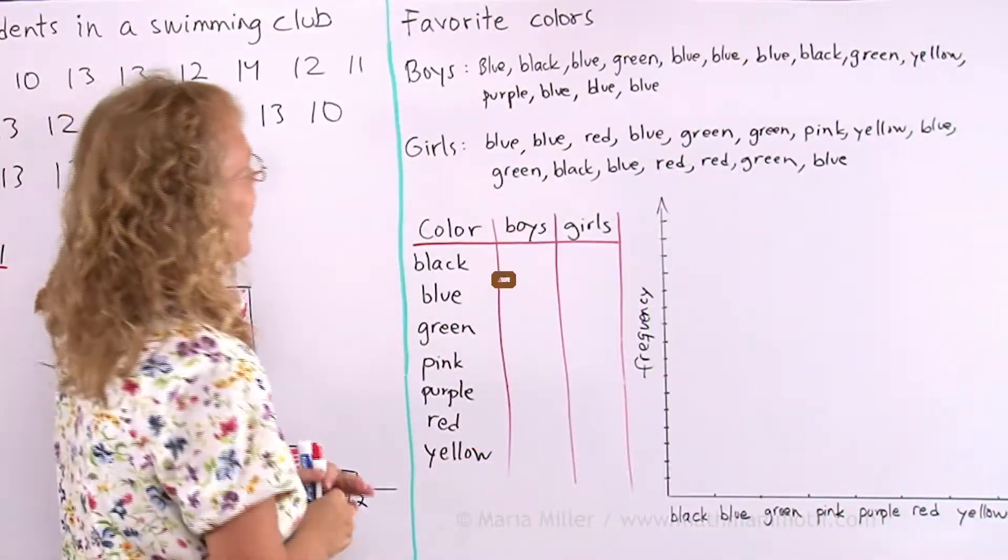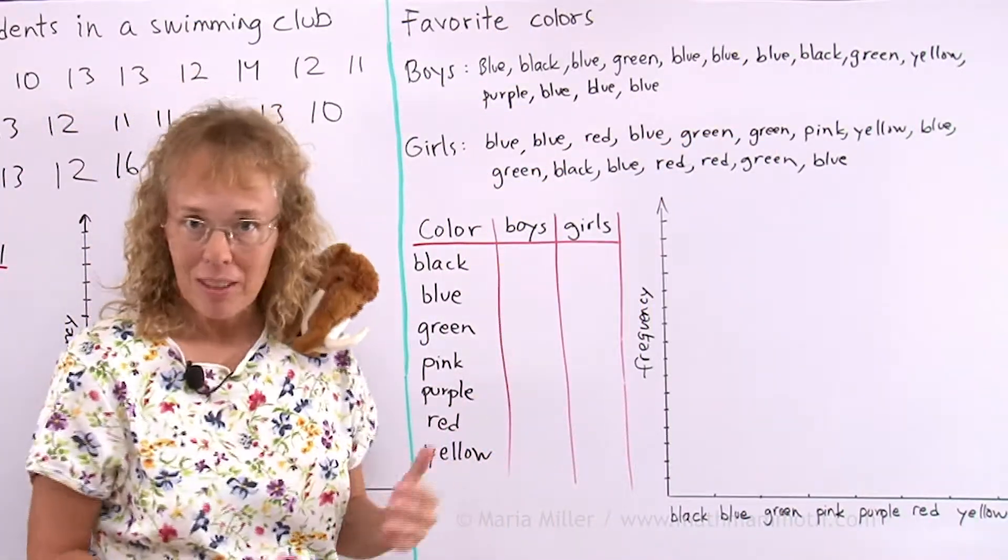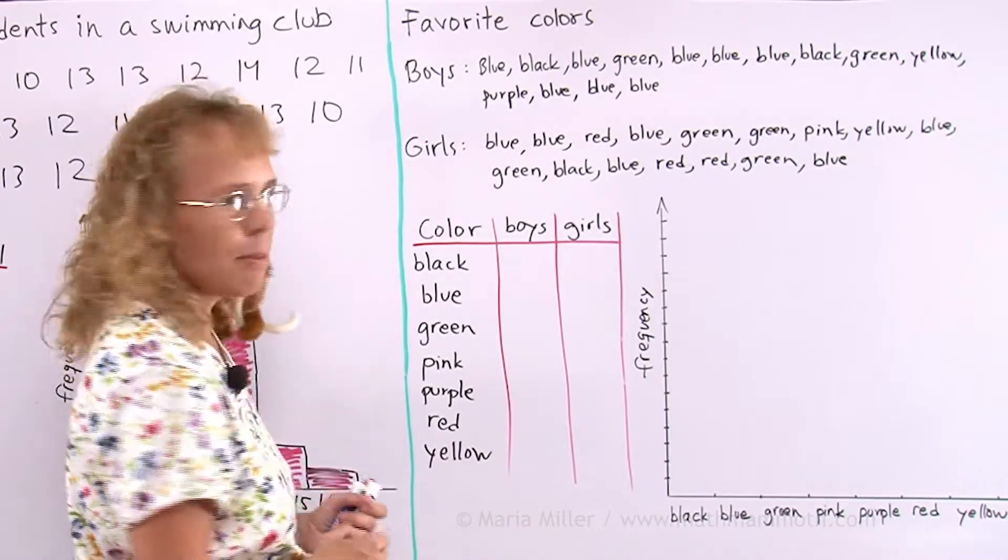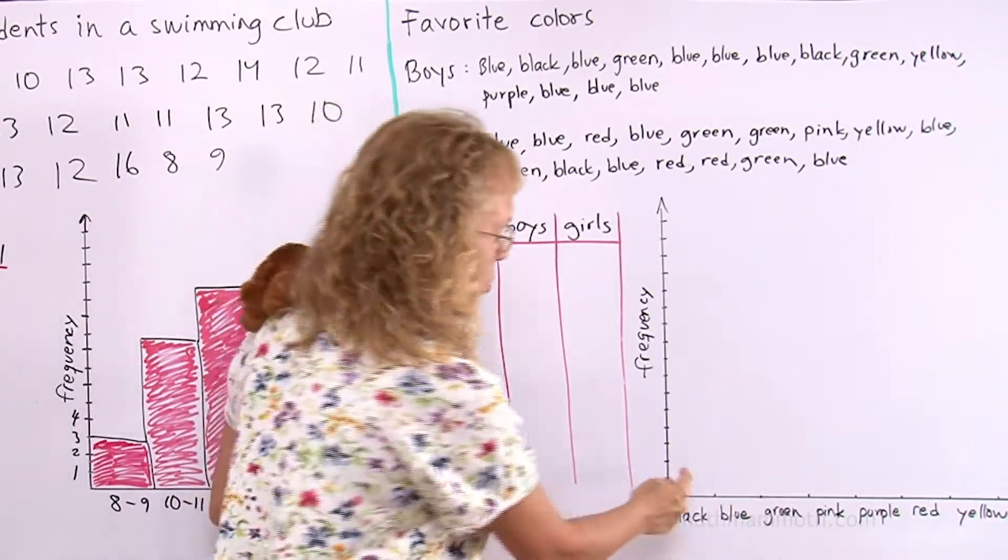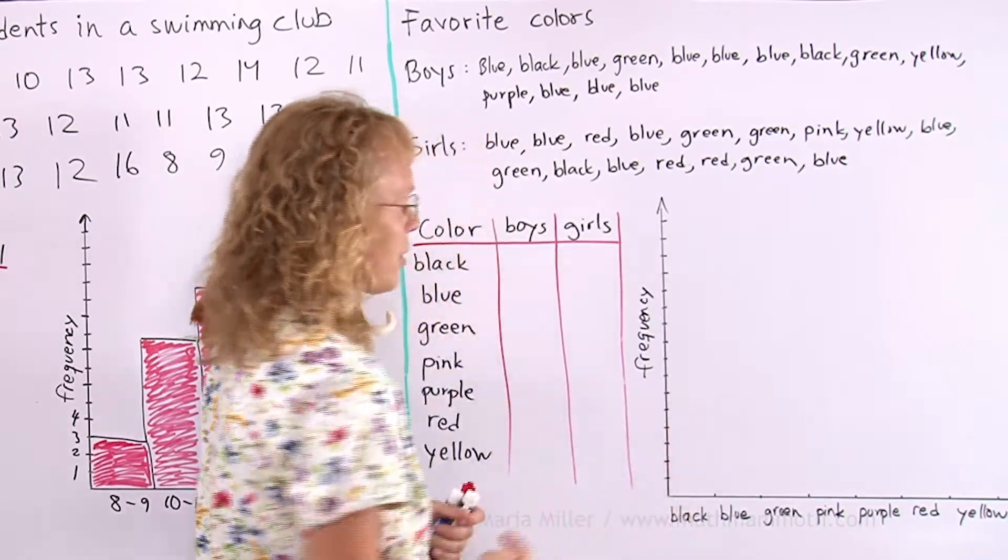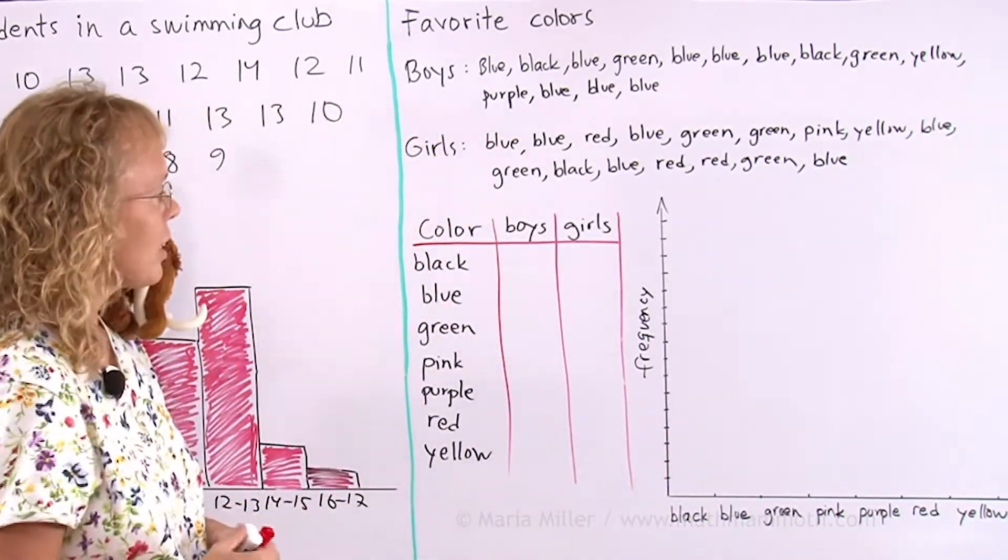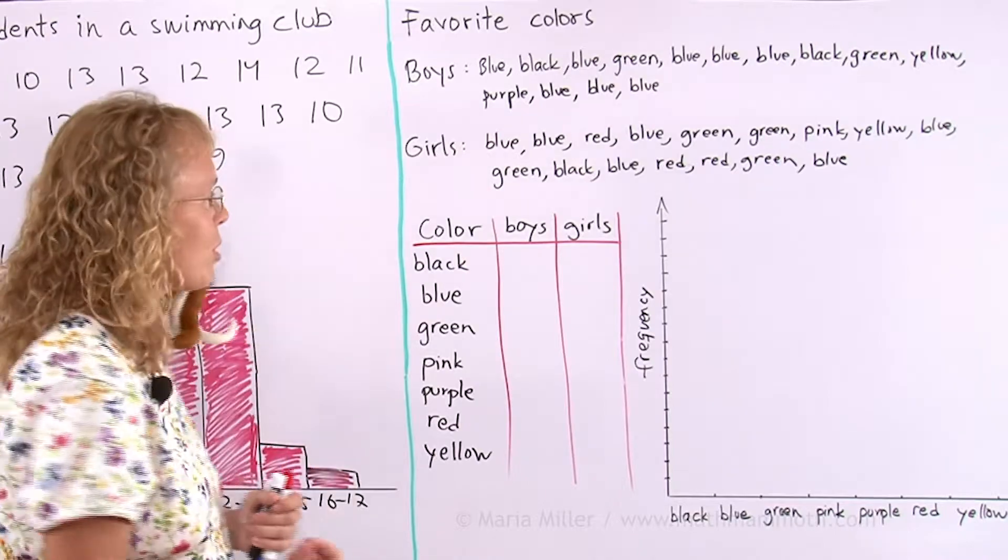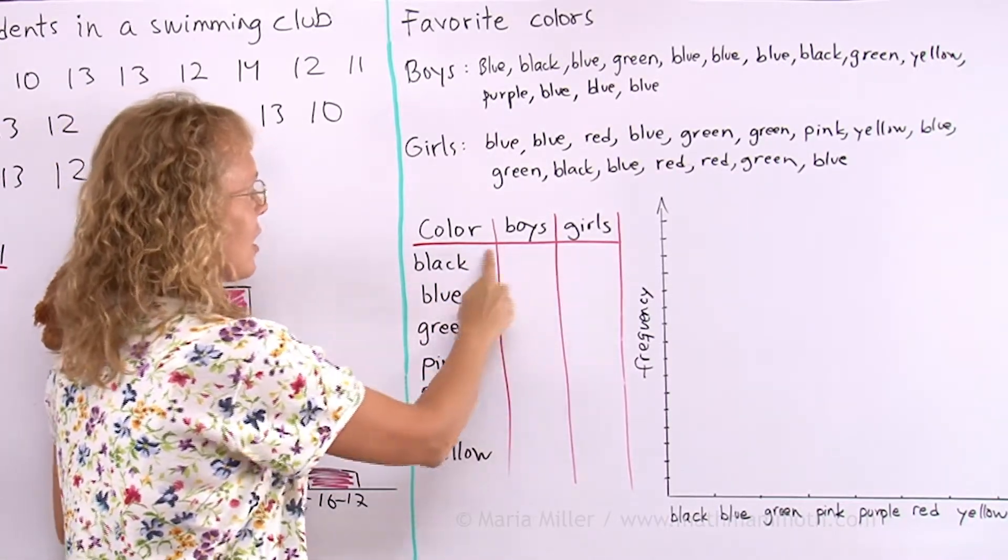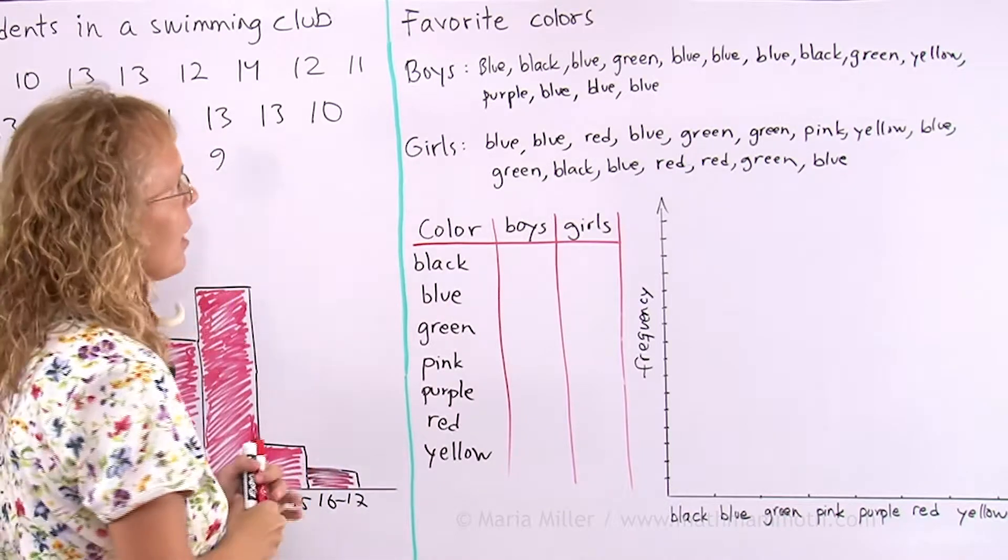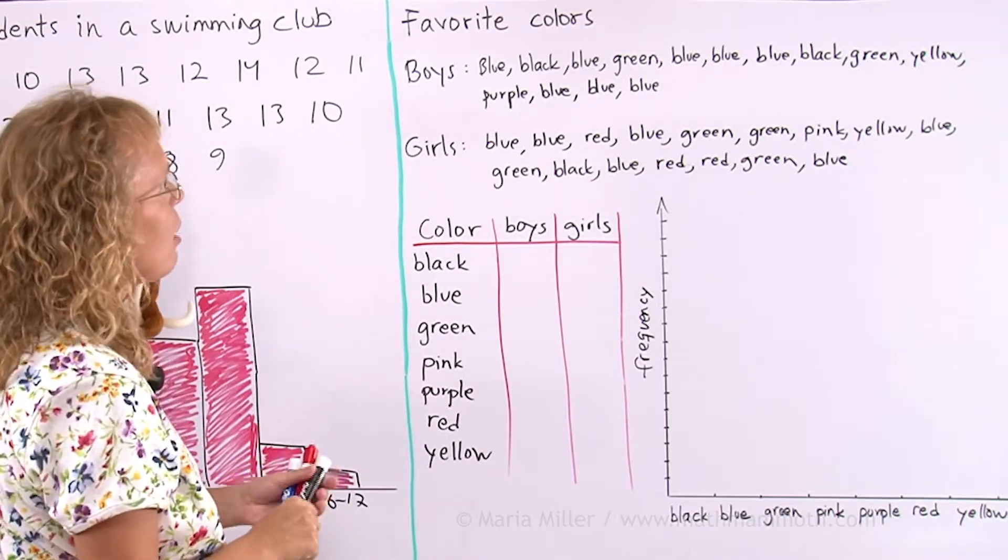And here we will make a double bar graph. And that simply means that there's going to be a double bar for each of these categories here. Two bars, one for boys, one for girls. And to get started, I of course have to get the count of each category. How many boys liked black and how many girls said that black was their favorite color. And that's just easy, we just count here.